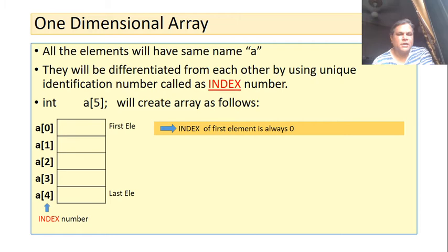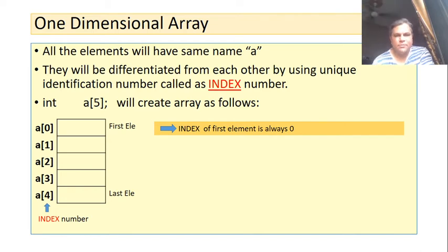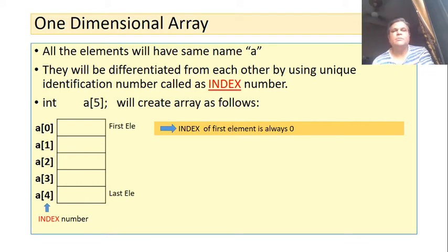In our case, since the capacity is 5, the index of the last element is 4. So unlike basic data type variables, where one variable can hold only one value, arrays are variables that can hold many values simultaneously.